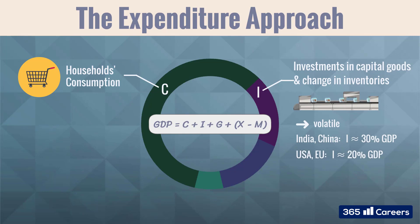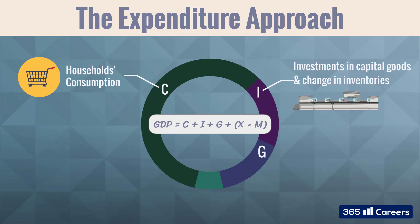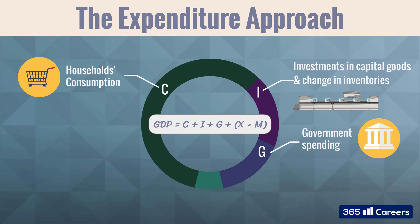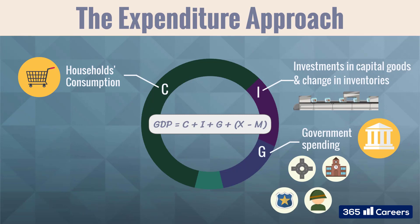In the USA and the European Union, 20% of the GDP is comprised of investments. The third component of total output is the amount of government spending on final goods and services, or G. This is when governments invest in public goods and services, such as the construction of roads, schools, or spending on services such as police, military, and postal services.